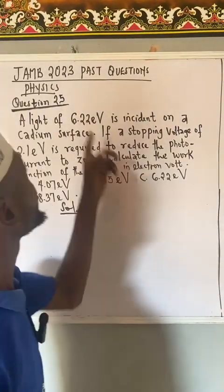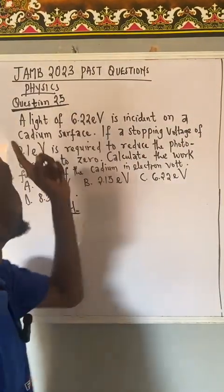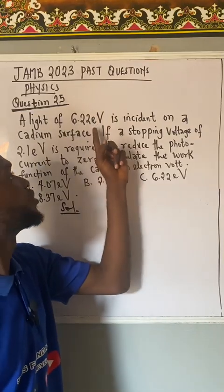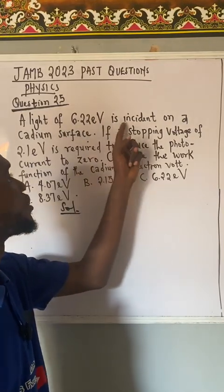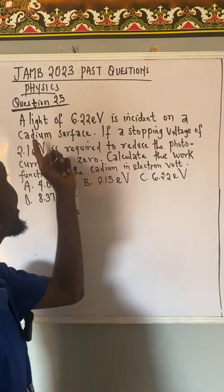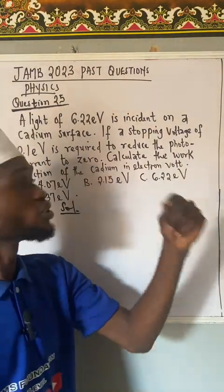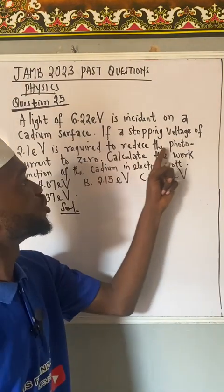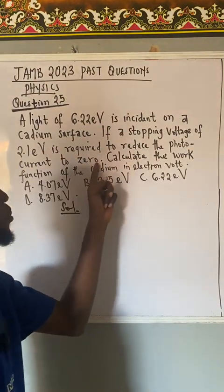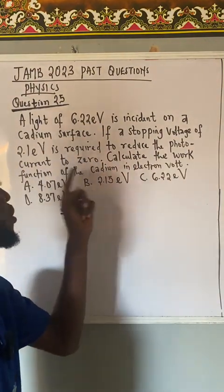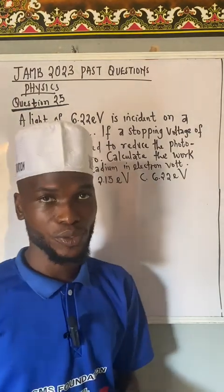Question 25, JAM 2023 past question, physics. A light of 6.22 electron volts is incident on a cadmium surface. If a stopping voltage of 2.1 electron volts is required to reduce the photocurrent to zero, calculate the work function of the cadmium in electron volts.